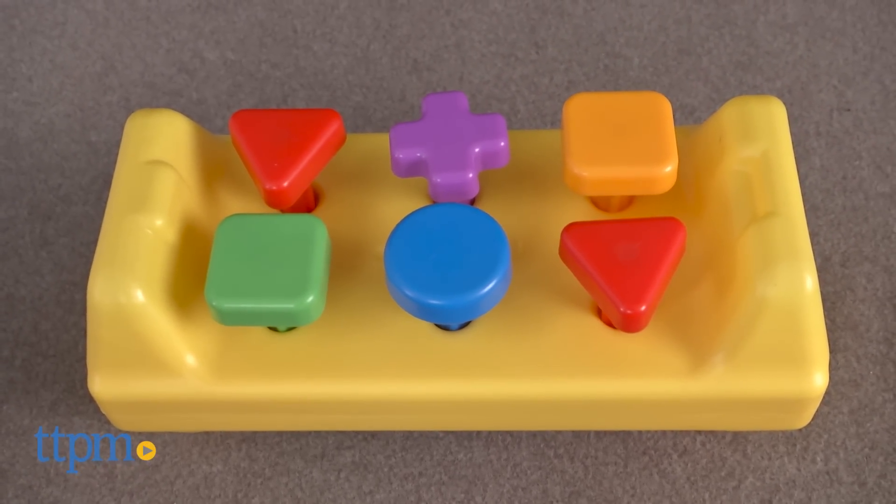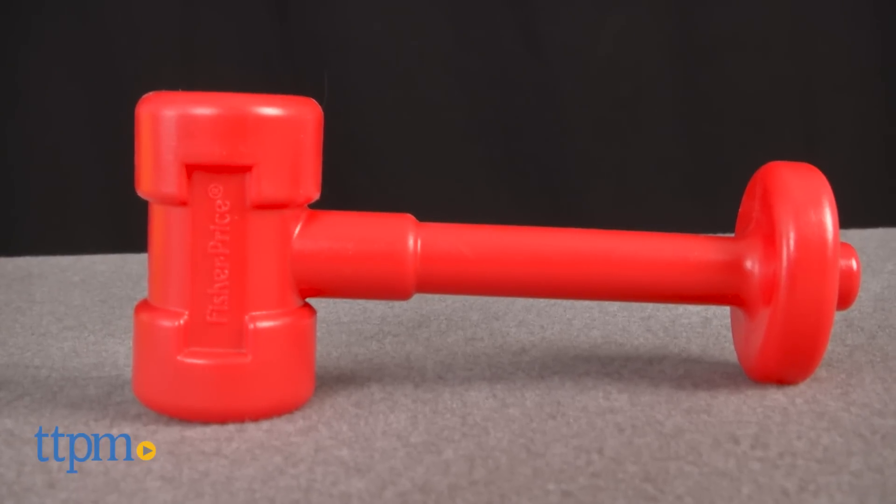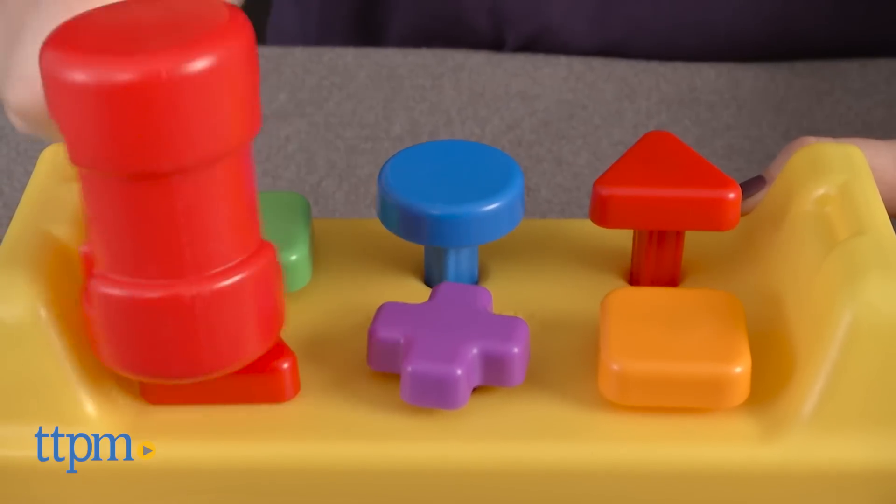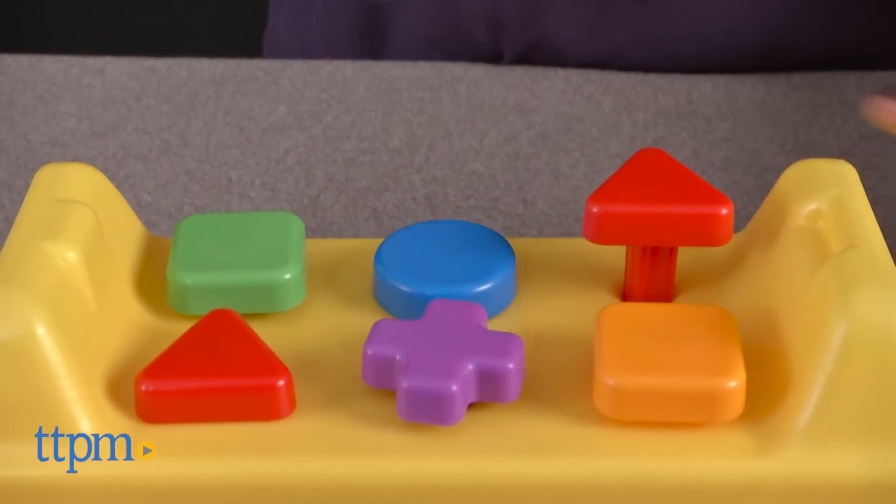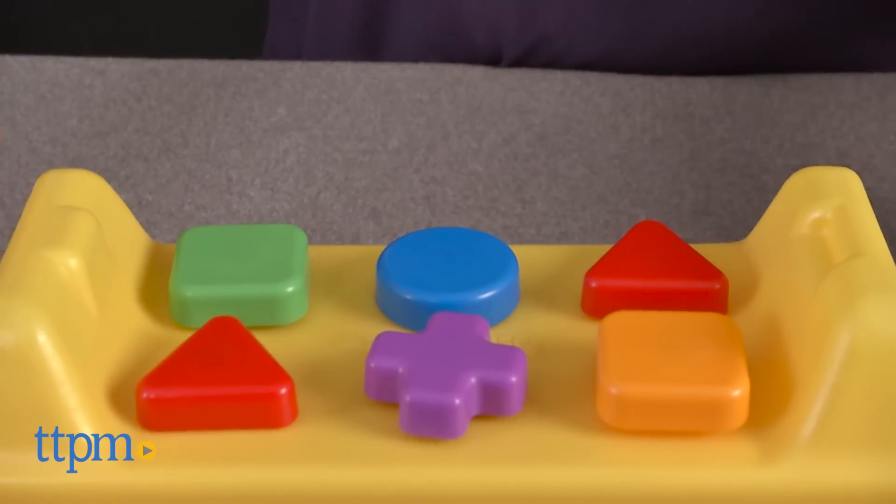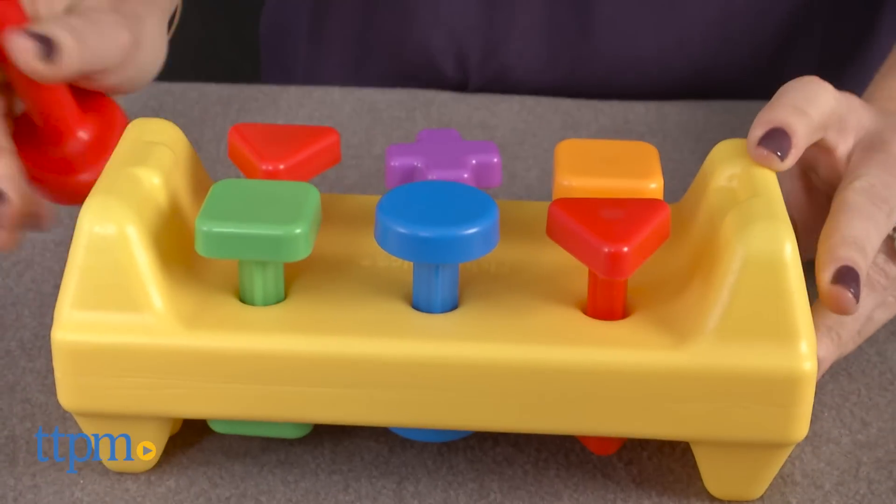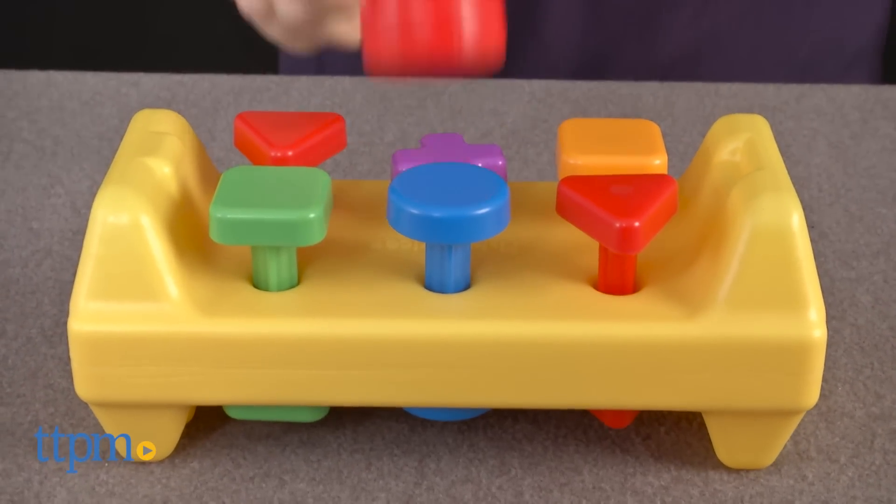four different shapes. It also comes with a plastic hammer for hammering the pegs. The pegs in this bench are permanently attached, so once they're hammered through, just flip the bench and start again. Kids will appreciate the continuous play,